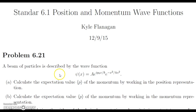One thing about position and momentum when talking about wave functions is that the uncertainty principle applies — as soon as we are very certain about where the position of a particle is, we're very uncertain about where the momentum is, and vice versa. We know that the product of their uncertainties is always going to be at least ℏ/2.